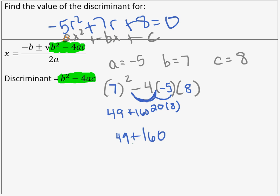If we use a calculator for that, we're going to get 209. So my discriminant equals 209.